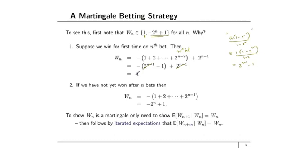The other situation is that we have not yet won after n bets. In that case, the winnings Wn equals minus (1 + 2 + ... + 2^(n-1)), since we also lost the nth bet. Summing this up gives minus 2^n plus 1, which equals minus 2 to the power of n+1. So the two possible values of Wn are 1 and minus 2 to the power of n+1.